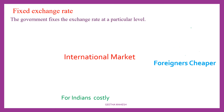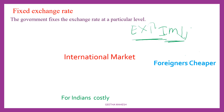The government will increase exports and discourage imports. This is how the government can correct the deficit in the Balance of Payment. Let's take a look at this example.